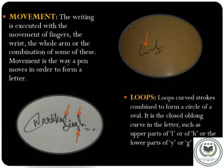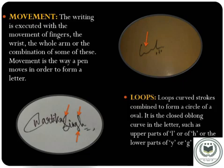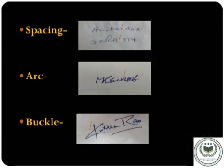Fourth is movement. Writing is executed with the movement of fingers, the wrist, the whole arm, or a combination. The arrow indicates an example of wrist movement in this picture. Fifth are loops — curved strokes that combine to form a circle or oval. This is the closed oblong curve in letters such as the upper part of L or H, or the lower part of Y and G. In this picture, the arrow indicates the letter S having a large loop, G having a small loop, and H having a medium loop.